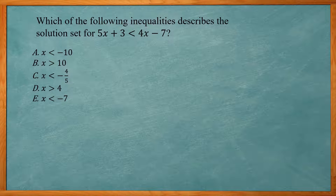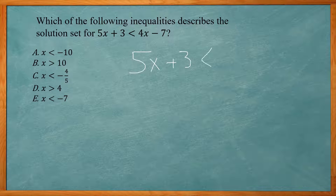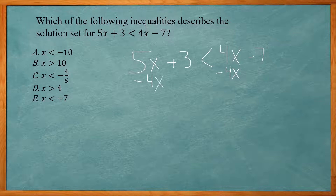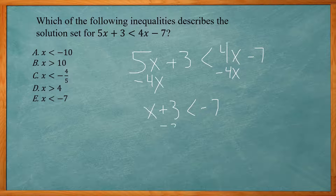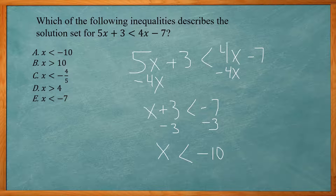This problem asks: which inequality describes the solution set for 5x plus 3 is less than 4x minus 7? We get x by itself — since there are x's on both sides, subtract 4x from both sides to get x plus 3 is less than negative 7. Then subtract 3 from both sides to get x is less than negative 10. Answer choice A is correct.